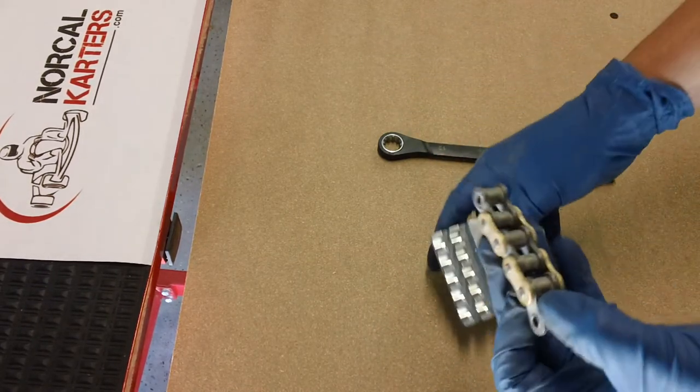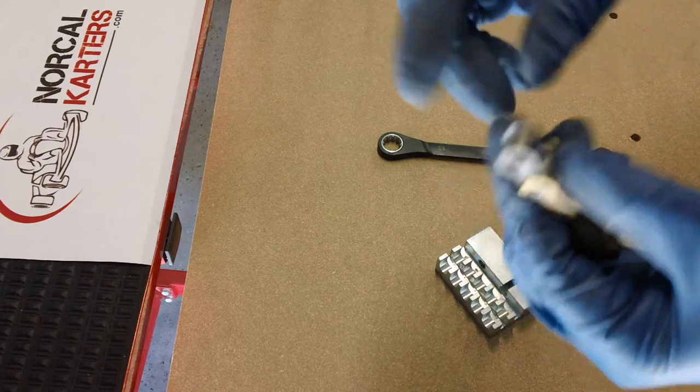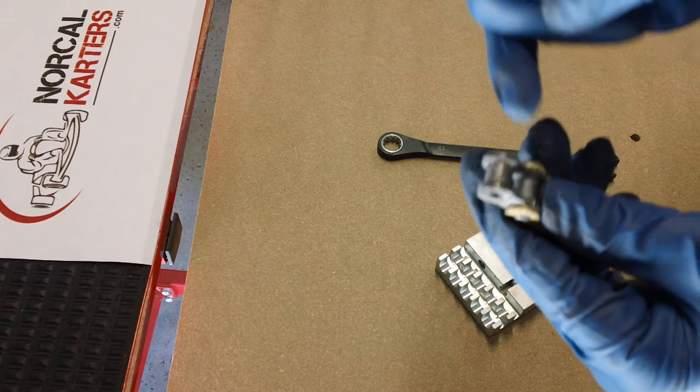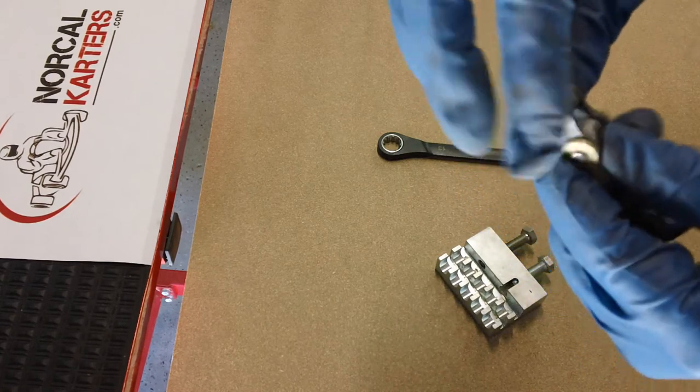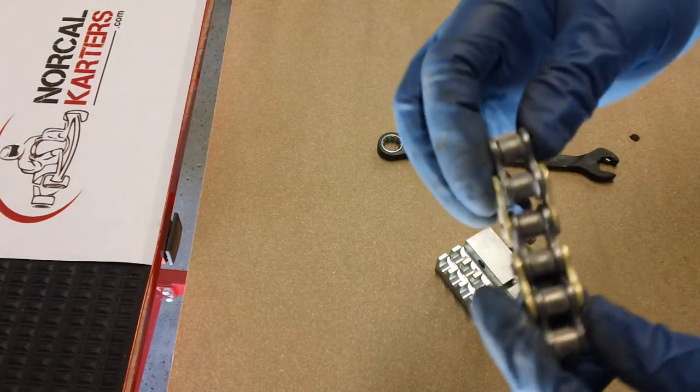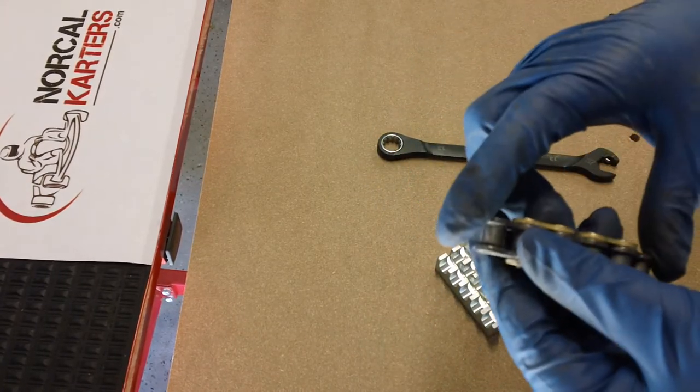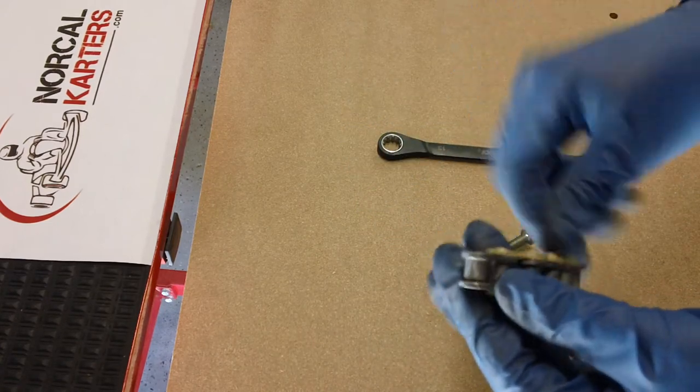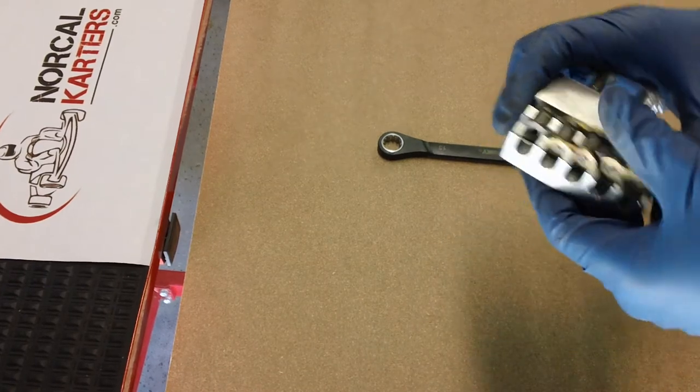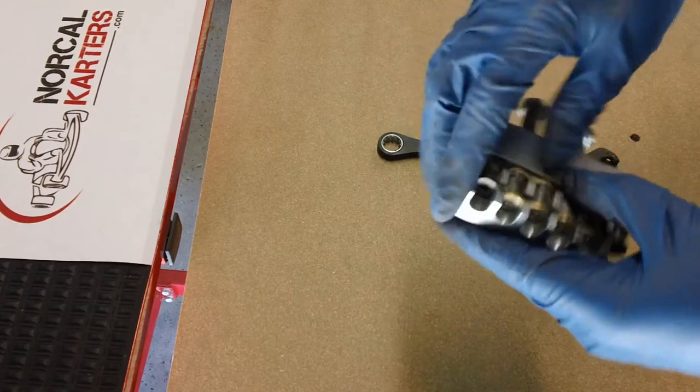With this 428 there's actually a master link that's going to go on this end, so when you're done you're going to have to have a male end, basically two of them, so the master link can connect the two. On other chains like a 219 or 35 chain, you're not going to use a master link. You're going to break the chain, remove the links required to make it the right length, then put the chain back together.